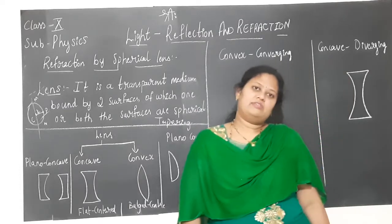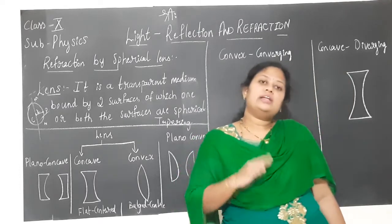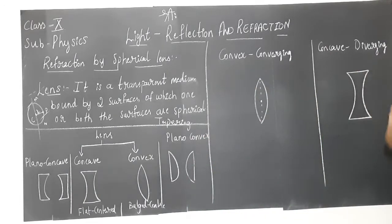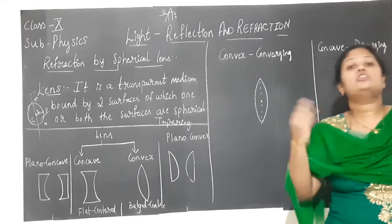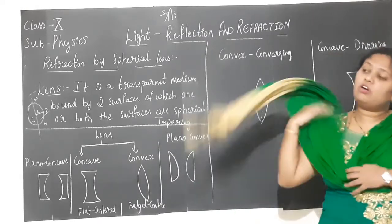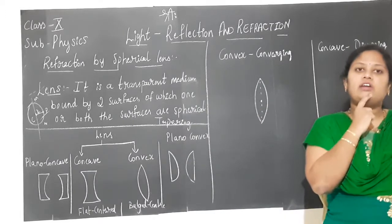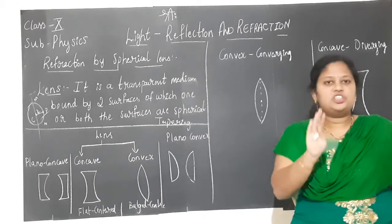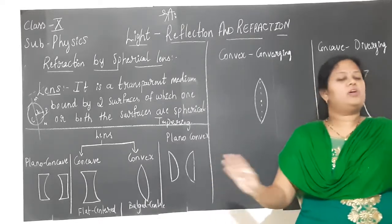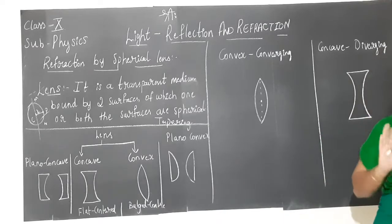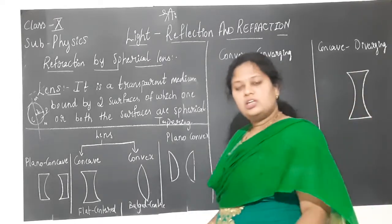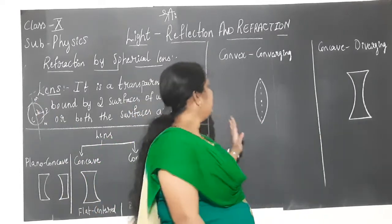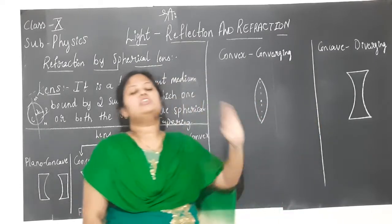When it comes to lenses, convex lens is converging and concave lens is diverging. This can be confusing at first — in mirrors, concave is converging and convex is diverging, but in lenses, convex is converging and concave is diverging. All students face this confusion initially, so don't worry.